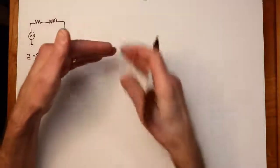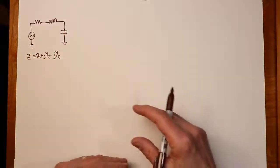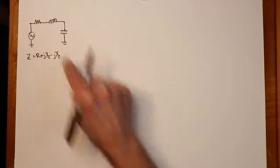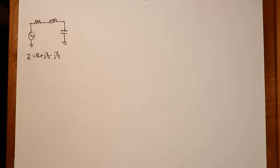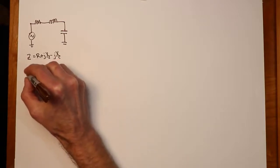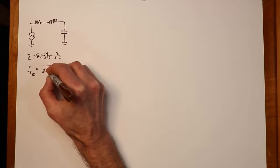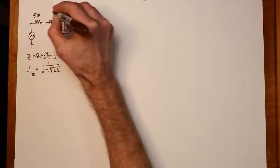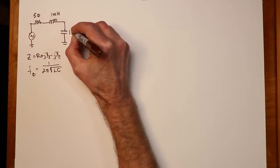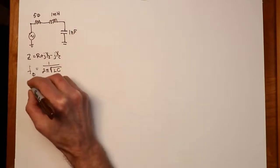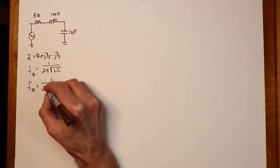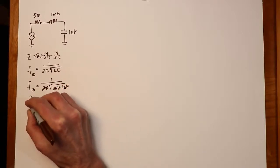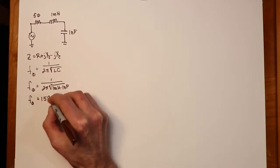The bandwidth is defined by upper and lower half-power frequencies. To find the resonant frequency, as long as we know the inductance and capacitance values, we use the formula: f₀ = 1 / (2π√(LC)). Let's throw some numbers in — a 50-ohm resistor, a 1 millihenry coil, and a 1 nanofarad capacitor. Plugging those in, the resonant frequency works out to 159 kilohertz.